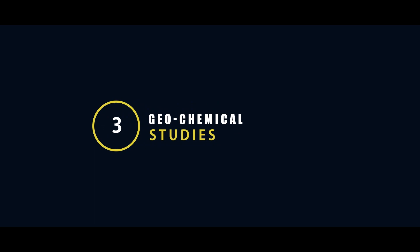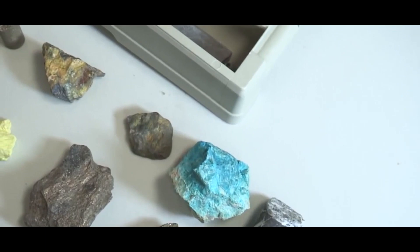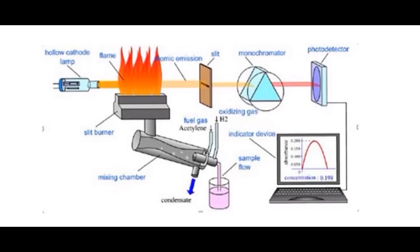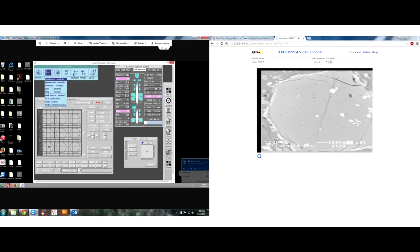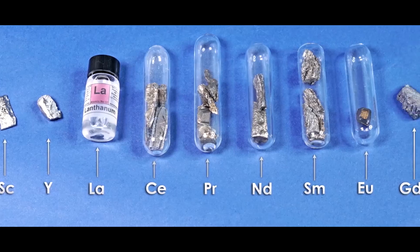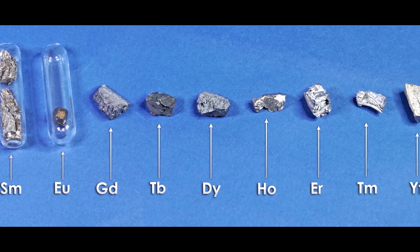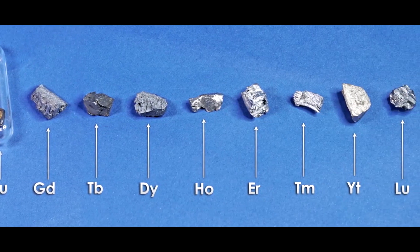Unit 3 will discuss geochemical studies with the help of XRF for identifying major elements and minor and trace elements. Also we will discuss about AA, i.e. atomic absorption spectroscopy. Also we will talk about EPMA, i.e. electron microprobe analyzer. Also we will talk about ICP-MS for identifying rare-earth elements.